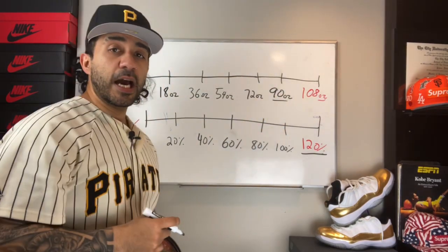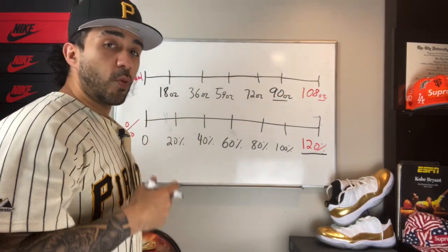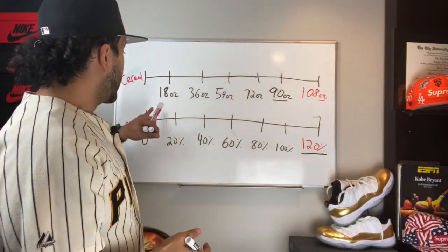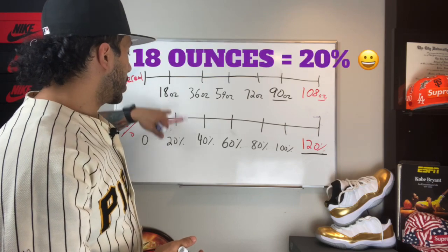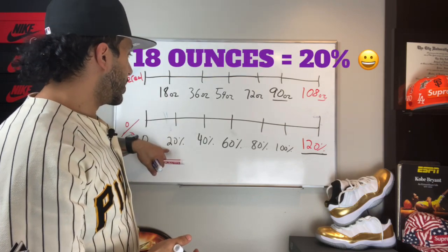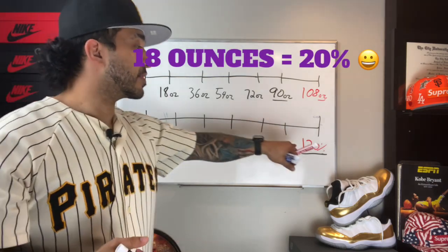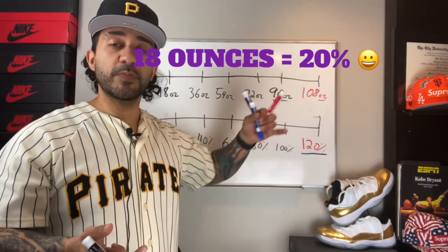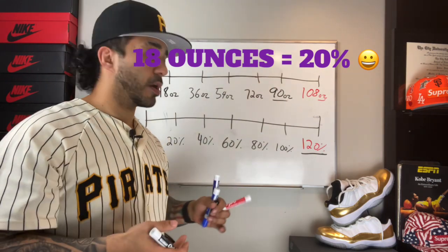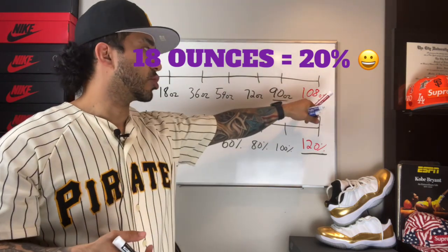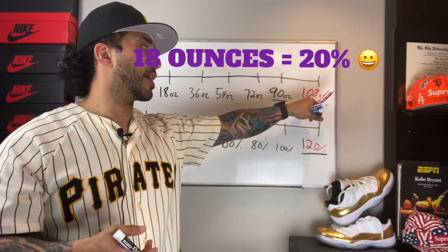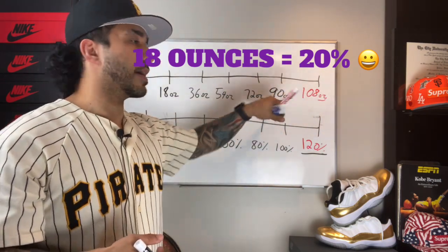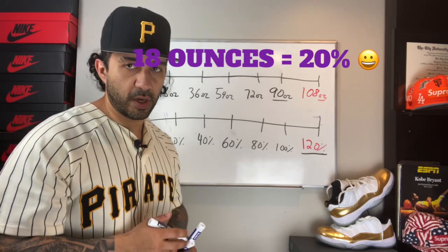Now, if you wanted to do this a shorter way, once you realize that 18 ounces represented 20%, you could have said, well, if I know 18 is how much it's going up by, you could have done 108 ounces minus 18, and that would have also given you the 90.